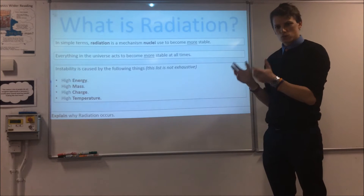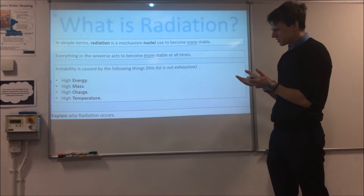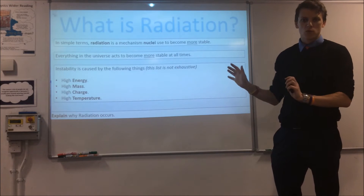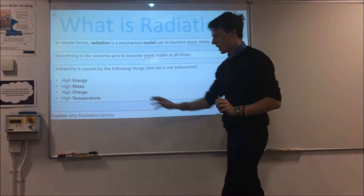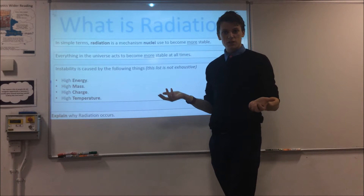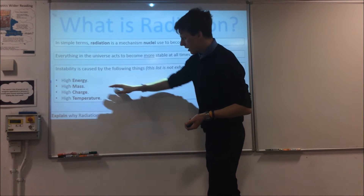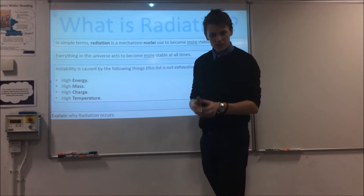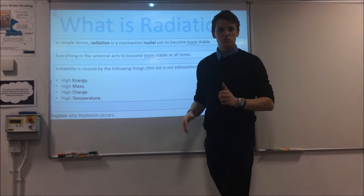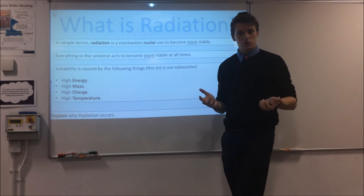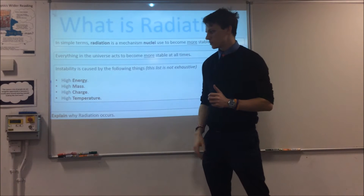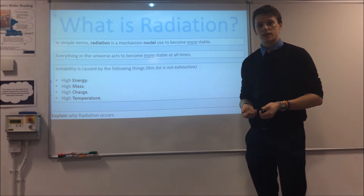In terms of stability, what can make things unstable? There are a few different things. If you have very high energy — things that are really hot, for instance — they are very unstable. If you have high mass, really big objects, that's pretty unstable. If you have a large charge, that's not particularly stable. Temperature and energy are also kind of interlinked there.